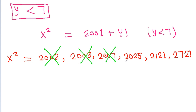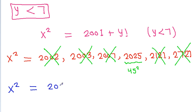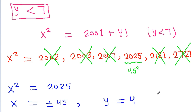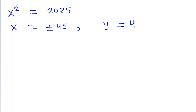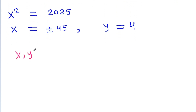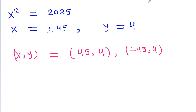Now 2002, 2003, and 2007 are not perfect squares. But 2025 is equal to 45 squared, and 2121 and 2721 are also not perfect squares. So we get x squared equal to 2025, meaning x equals plus or minus 45, for y equal to 4. Therefore the solutions are (x, y) = (45, 4) and (−45, 4).